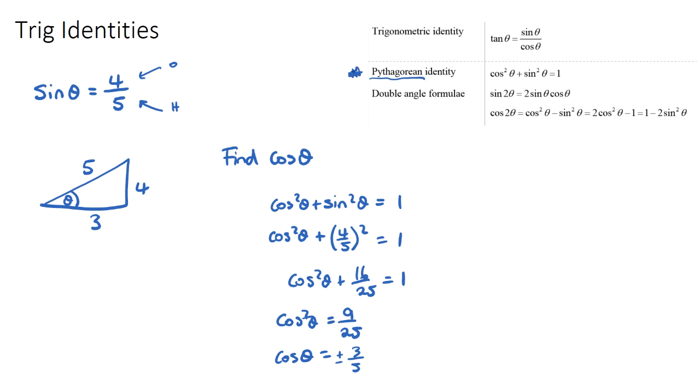So this formula here that I put a star next to supports that if we get given sine or cos as a ratio we can find the other just using the Pythagorean identity or just drawing a triangle and using Pythagoras. So that's one of the identities.